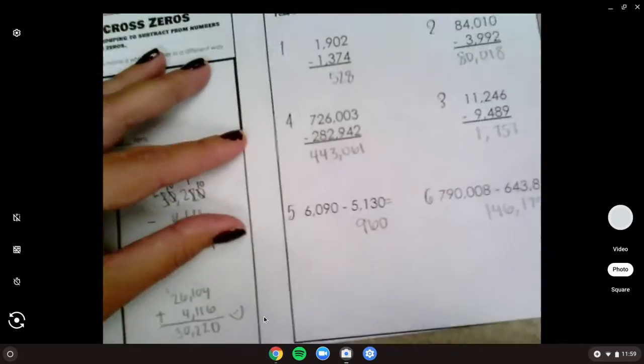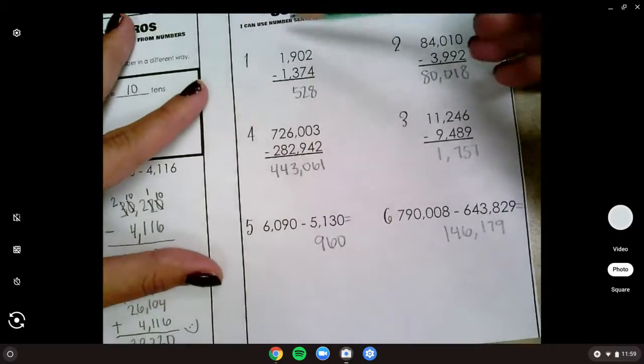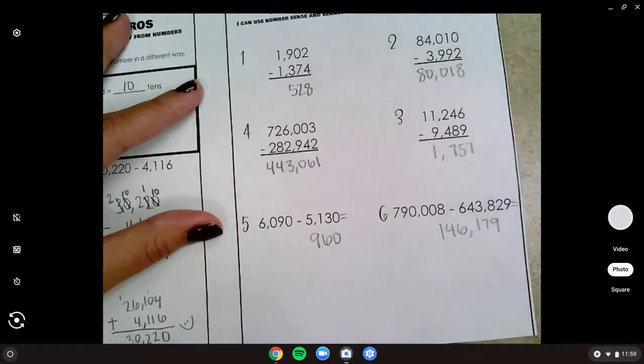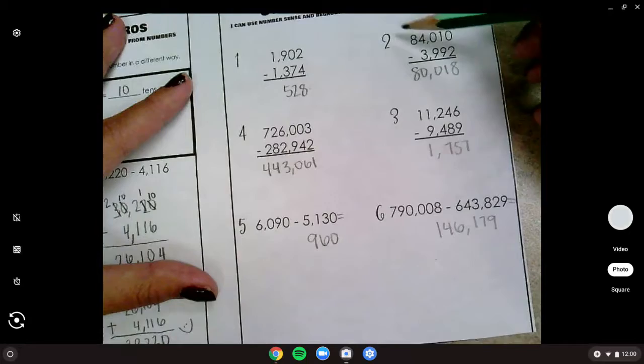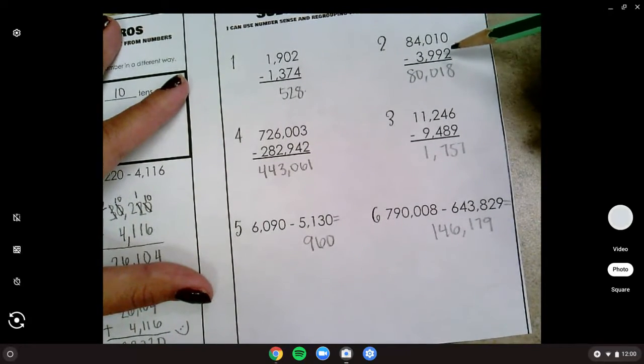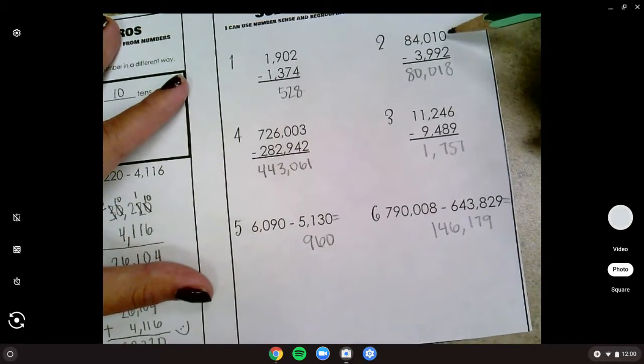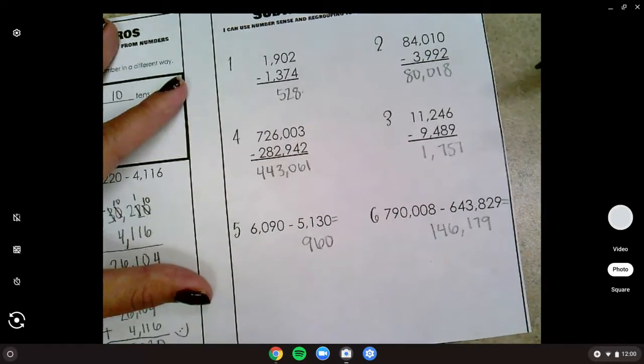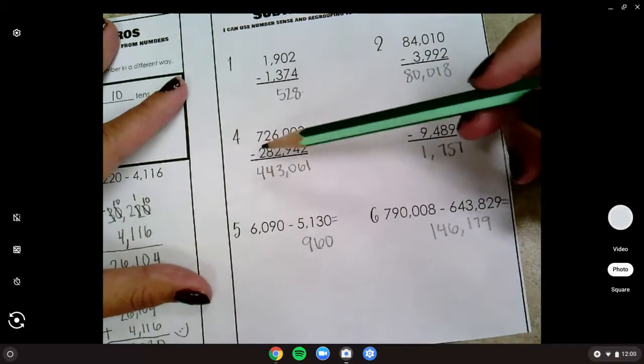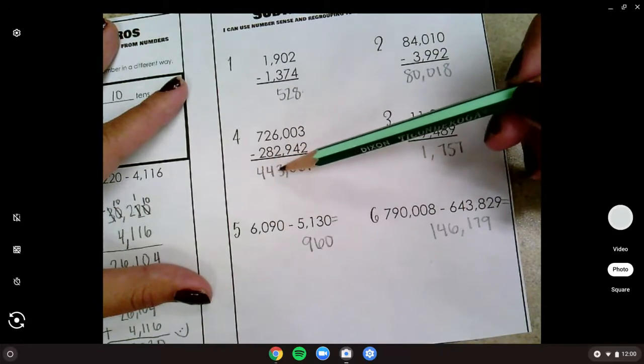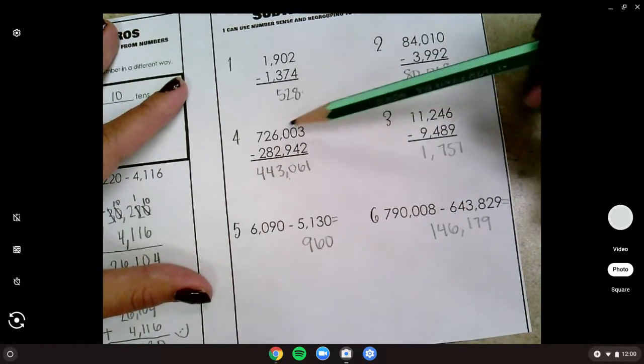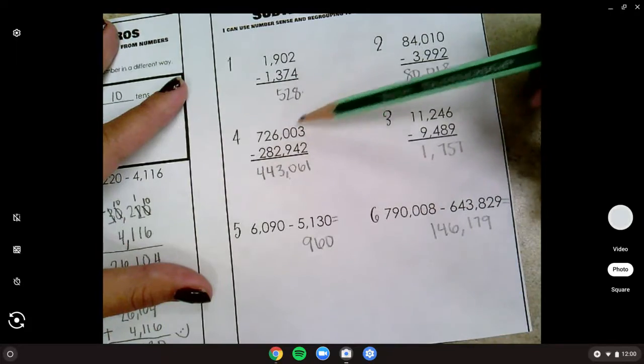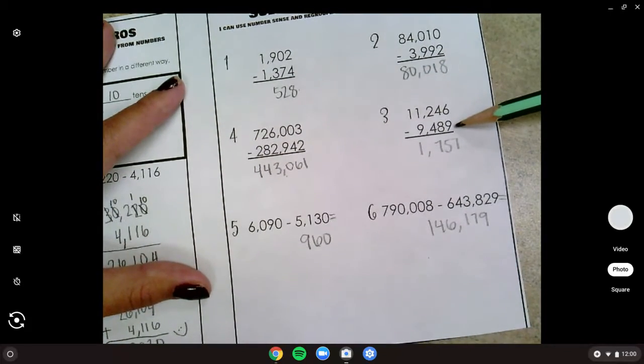All right, let's take a look. All right, number one, you should have got a difference of 528. Number two had a few zeros and you needed to regroup a lot, so make sure you got 80,018.